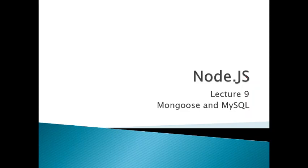Welcome back students. Today is the ninth lecture on Node.js. In our last lecture we covered MongoDB as a database and as a client connector, which helps your front-end application connect to the database. We saw CRUD operations in that MongoDB client connector. As I mentioned, there are two ways to connect to the database: first was the MongoDB client connector, and the second is the Mongoose way.